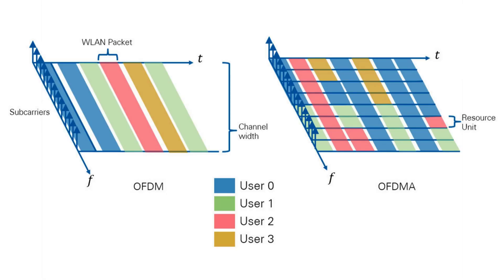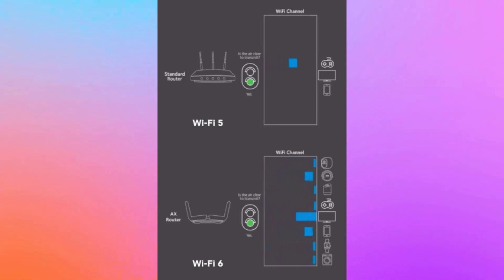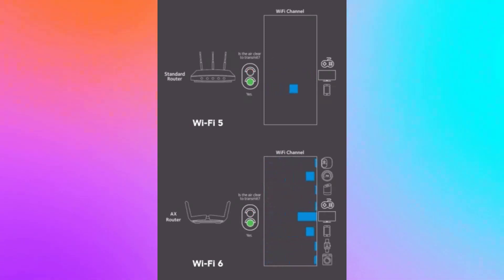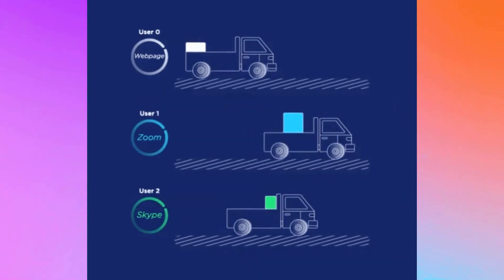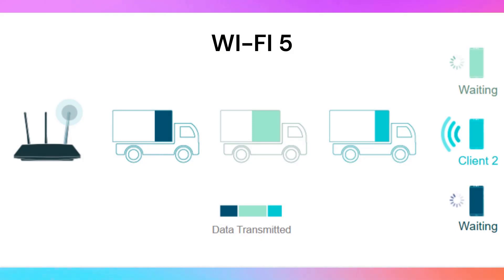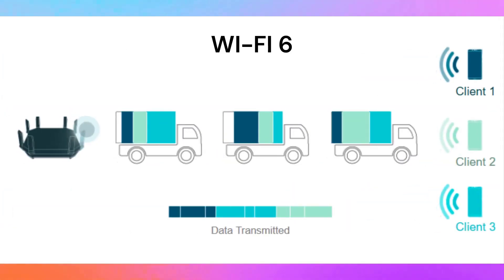Furthermore, the Wi-Fi 6 standard uses OFDMA for increased efficiency. Because of this, the Wi-Fi signal has no latency. Using the example of delivery trucks delivering data packets to your devices — with Wi-Fi 5, each delivery truck could only deliver one parcel to one device at a time, but with OFDMA, each truck can deliver multiple parcels to multiple devices simultaneously. This vast improvement works for both uploads and downloads.